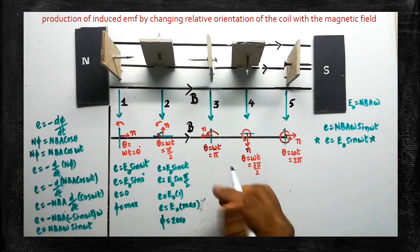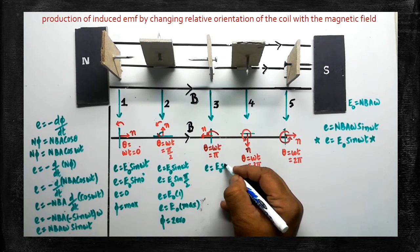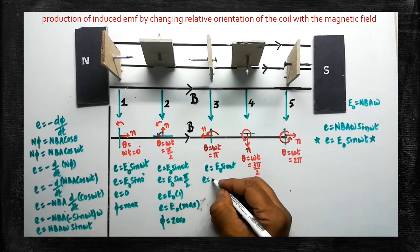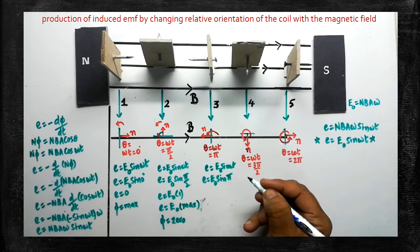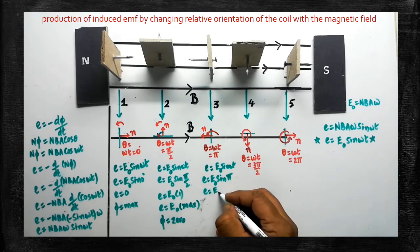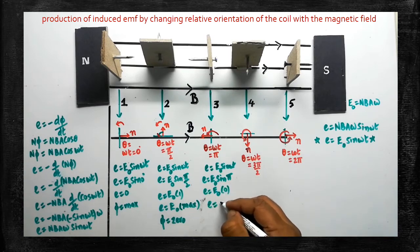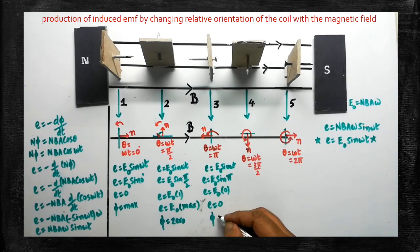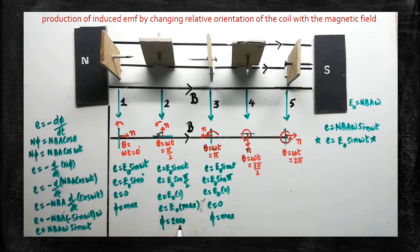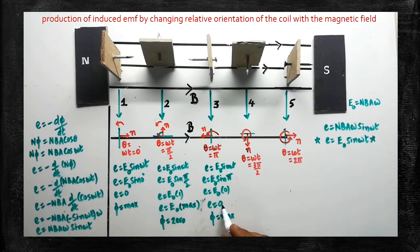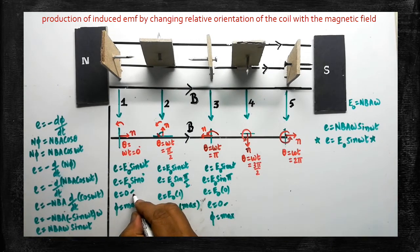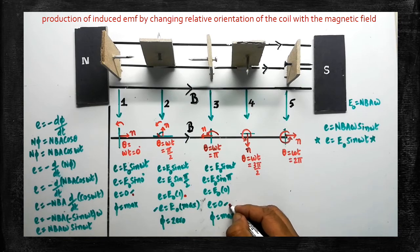sin(π/2) equals 1, therefore E = E₀. Maximum EMF is induced in the second position. The EMF has increased slowly from zero to maximum value E₀. In this position, the magnetic flux passing through the coil is zero — flux cannot pass through the coil in this orientation.